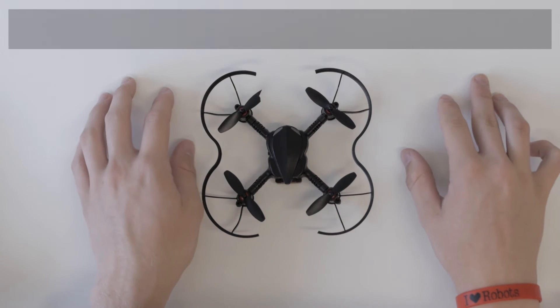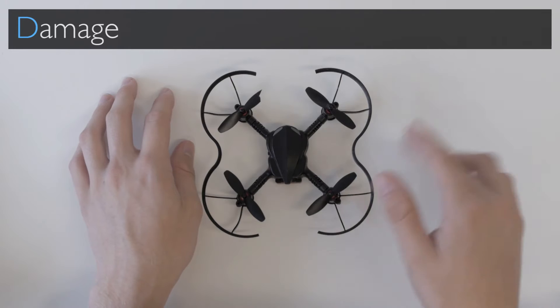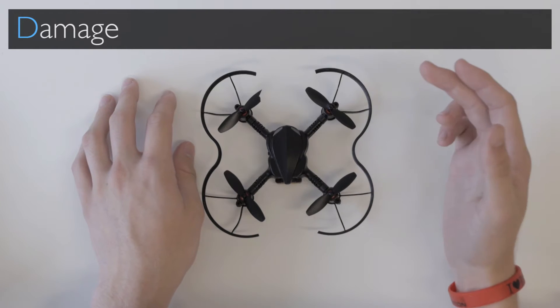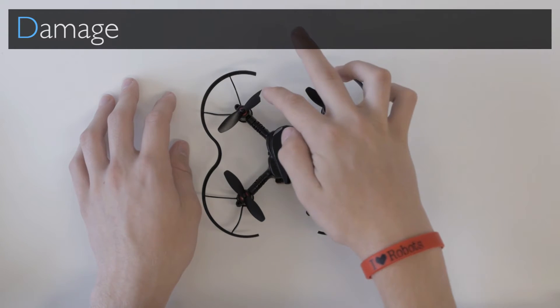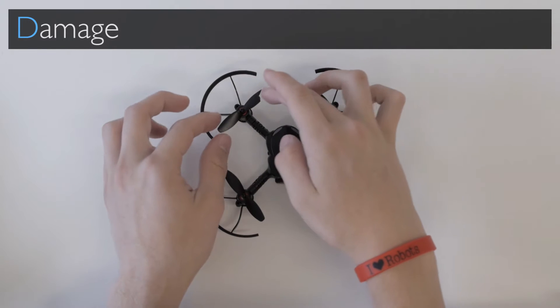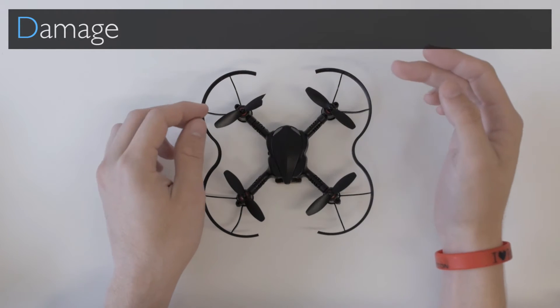The first thing you want to do is check for any damage. Here we can clearly see that this propeller has been broken. That's what you're looking for in this step - to see if there's a chip in a propeller,